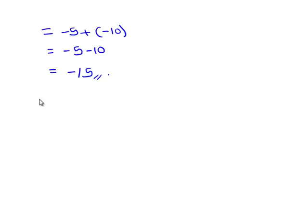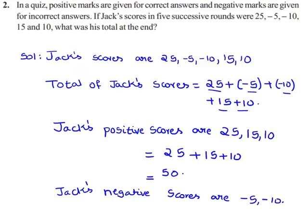Now, we will obtain the total of Jack's scores by adding the negative scores and the positive scores. The total of negative scores, which we got is minus 15. And we already got the total of positive scores, that is 50.